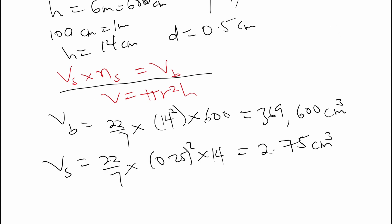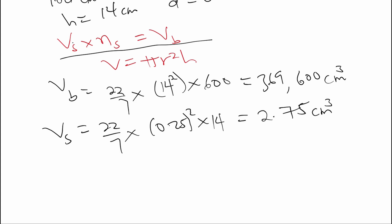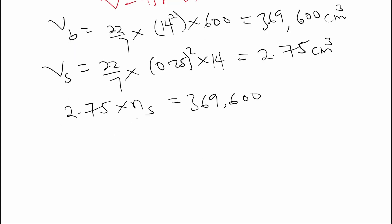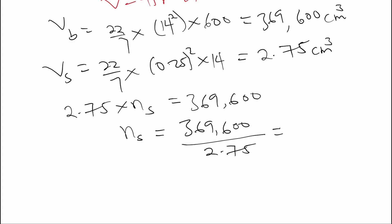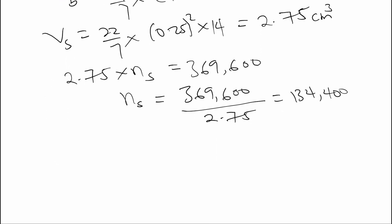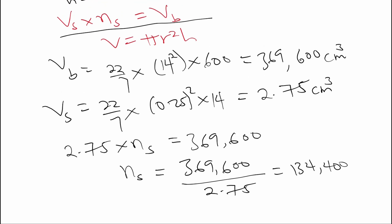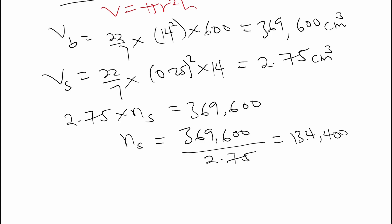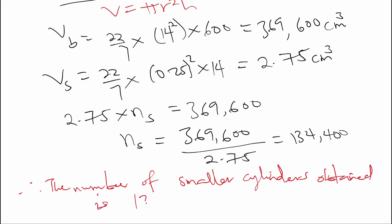The volume of the smaller cylinder is 2.75, and the volume of the bigger cylinder is 369,600. The number of smaller cylinders n equals 369,600 divided by 2.75, which gives us 134,400. Therefore, the number of smaller cylinders obtained is 134,400. This brings us to the end of question 8a.